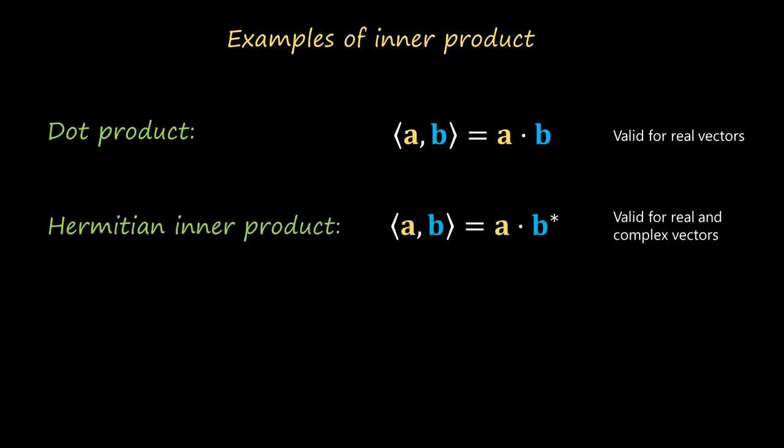We have also seen the following examples of inner product that fulfill all these conditions. First, our old friend the dot product, valid for vectors that are real. Second, our new friend, the Hermitian inner product, very similar to the dot product but doing the complex conjugate on the second vector. This change allows us to use it with vectors that are complex. If the vectors are real, then this inner product is the same as the dot product, so we could say that this one is more general.